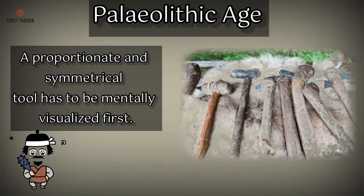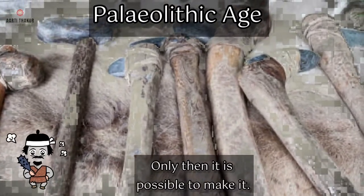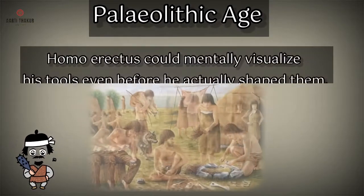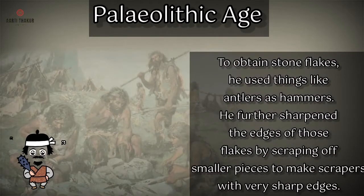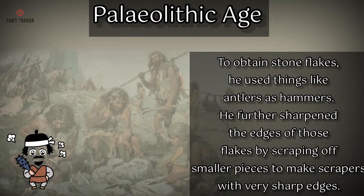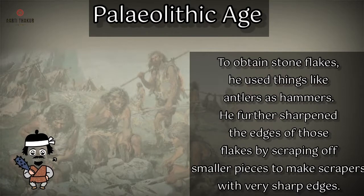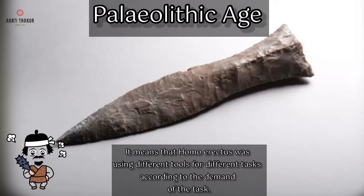Tools like the hand axe and cleaver made by Homo erectus are more proportionate and symmetrical than the choppers made by Homo habilis. A proportionate and symmetrical tool has to be mentally visualized first — only then is it possible to make it. Homo erectus could mentally visualize his tools even before he actually shaped them. To obtain stone flakes, he used things like antlers as hammers, and further sharpened the edges of those flakes by scraping off smaller pieces to make scrapers with very sharp edges.